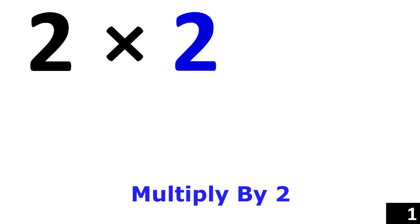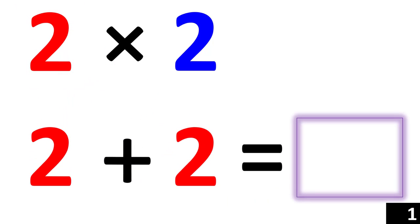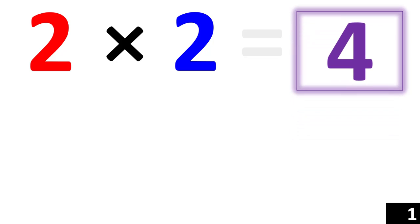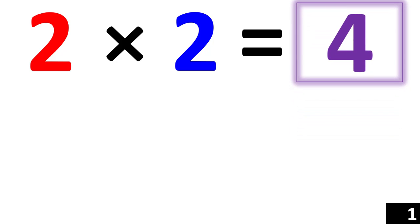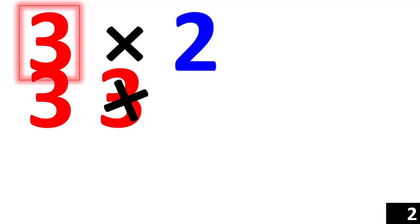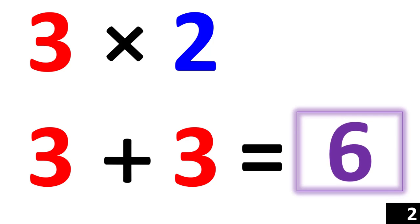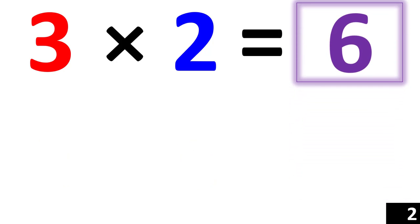Let's try 2 times 2. 2 times 2 is the same thing as 2 plus 2. 2 plus 2 is equal to 4. So 2 times 2 equals 4. 3 times 2 is the same thing as 3 plus 3. 6. So 3 times 2 equals 6.